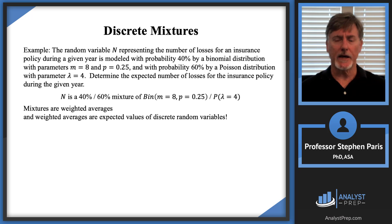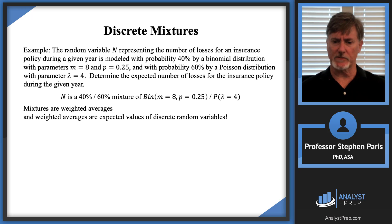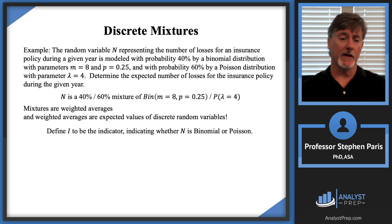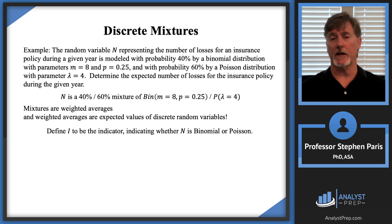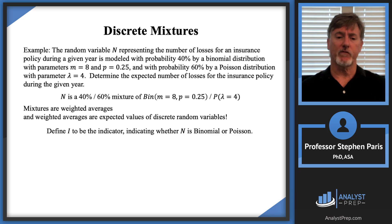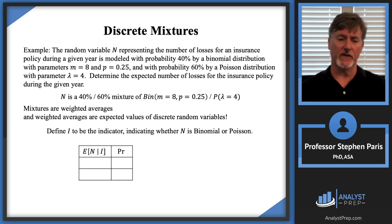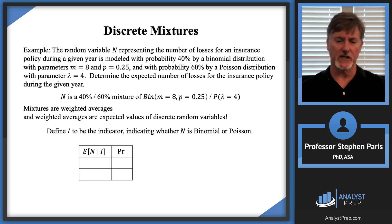Let me explain how to use this. The same process I use every time is to introduce a new variable I as the indicator. Define I to be the indicator of whether N is a binomial or Poisson distribution. I'm looking for the total expected value, so I'll look at the expected value in each case depending on what the indicator tells me.